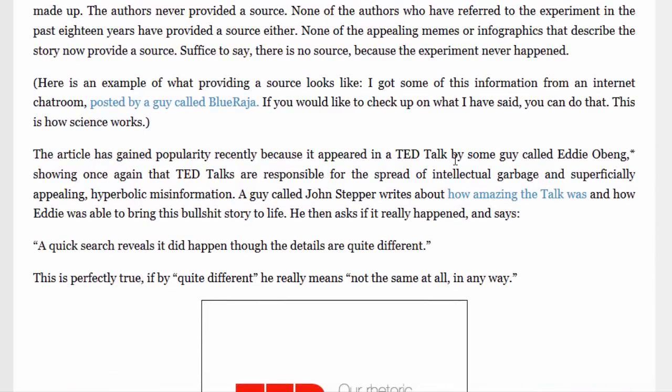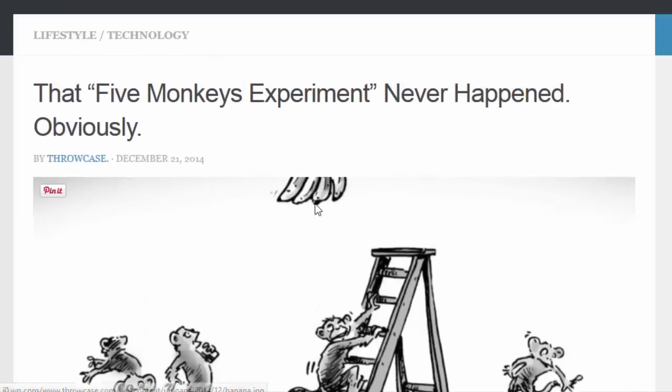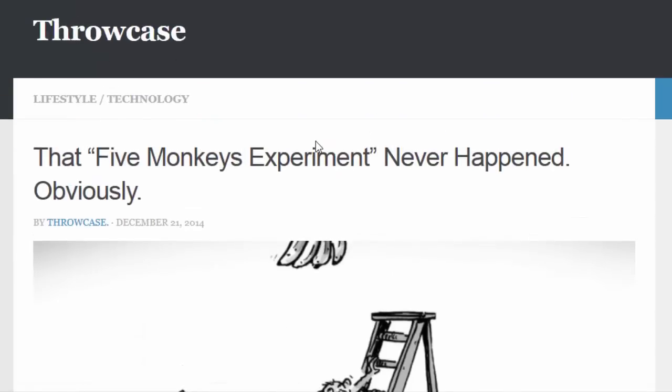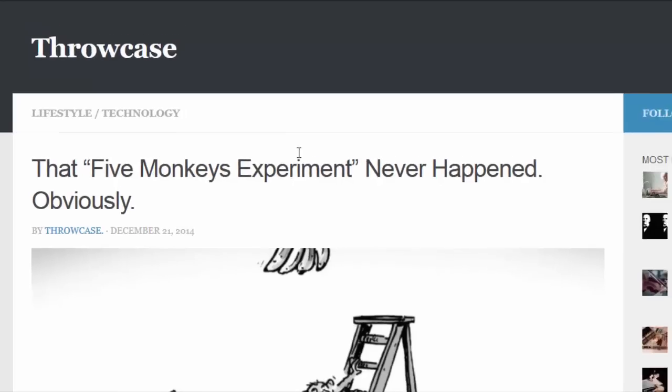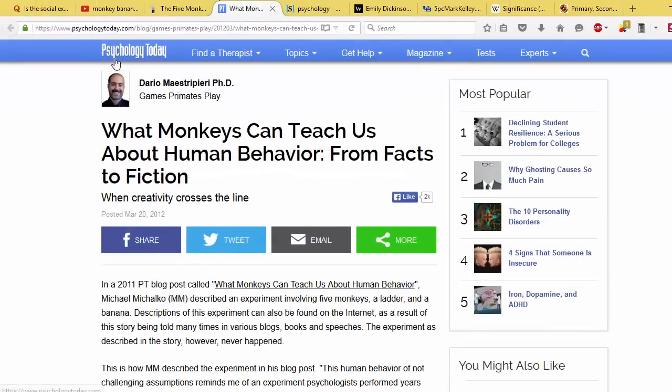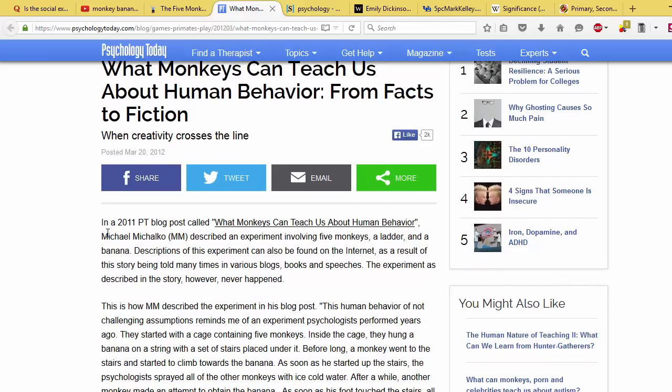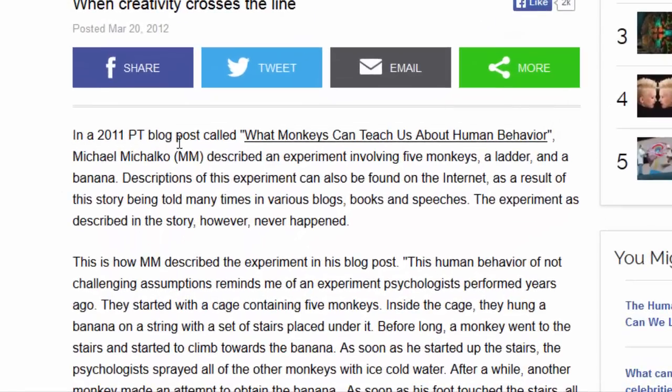Now you can read the rest of this article for yourself, and like I said, the links will be provided in the info box below. But you'd have every right to say, 'Well, this is from Throwcase. Who are they? Why would I believe them?' And that's fair enough. I'll also provide a link to an article by Psychology Today published back on March 20, 2012, entitled 'What Monkeys Can Teach Us About Human Behaviour: From Facts to Fiction.' Let me read out the first paragraph of this article. Quote: In a 2011 PT blog post called 'What Monkeys Can Teach Us About Human Behaviour,' Michael Michalko described an experiment involving five monkeys, a ladder and a banana.